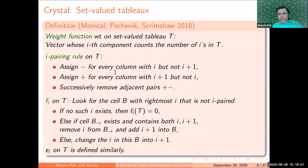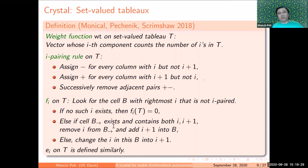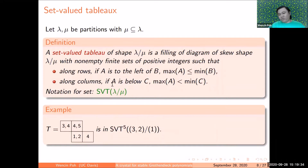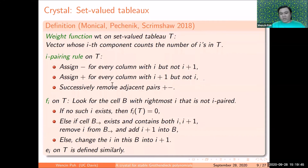Continuing the F_i definition: if the cell to the right contains both i and (i+1), remove i from that right cell and add (i+1) to the current cell. Otherwise, simply change the i to (i+1). When the sets are singletons, this reduces to the crystal operator for semi-standard Young tableaux. Similarly E_i is defined in reverse. E_i and F_i are partial inverses: whenever F_i(x) = x', we have E_i(x') = x.